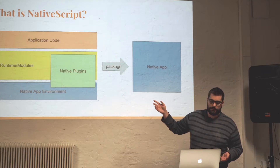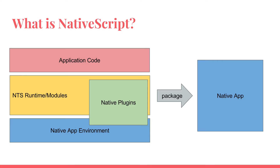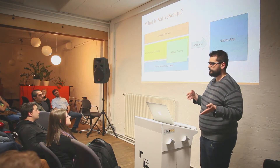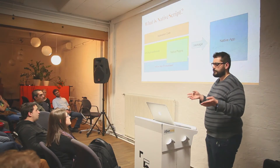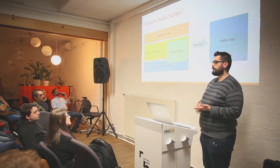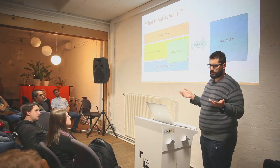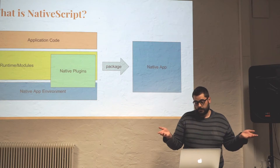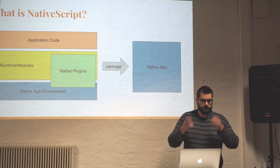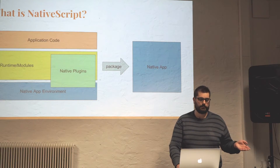If you write the app, you're in the red or green area. Either you write JavaScript application code or a native plugin. A native plugin is Java or Objective-C code with a bit of a JavaScript wrapper. This is packaged with a NativeScript runtime. I looked into the Android compilation, which comes with V8 for ARM and x86. The NativeScript runtime works in the V8 interpreter and wraps the native app environment calls.